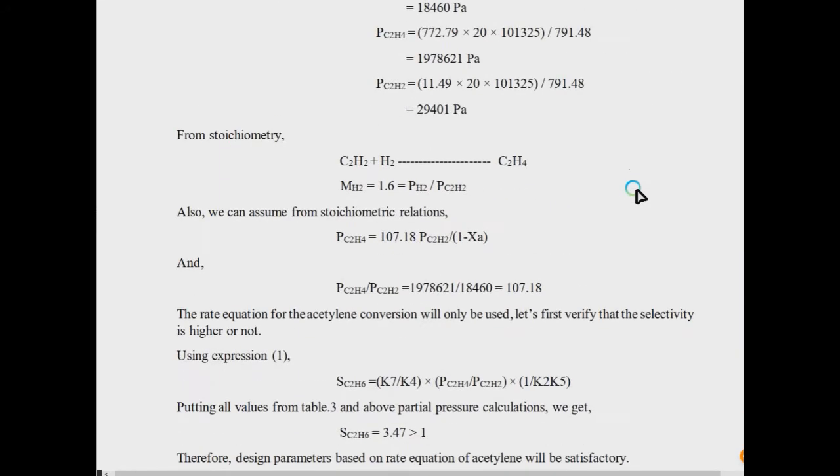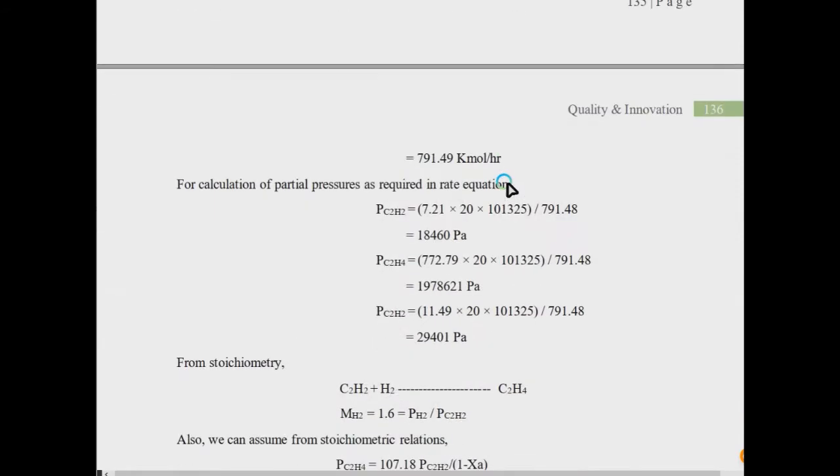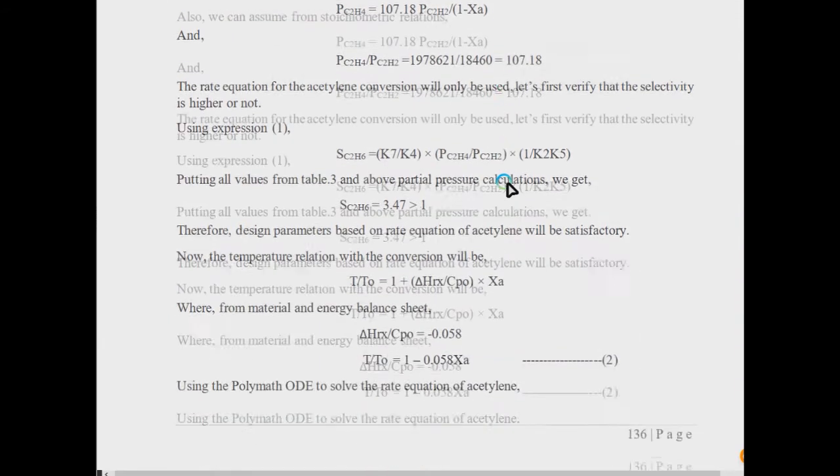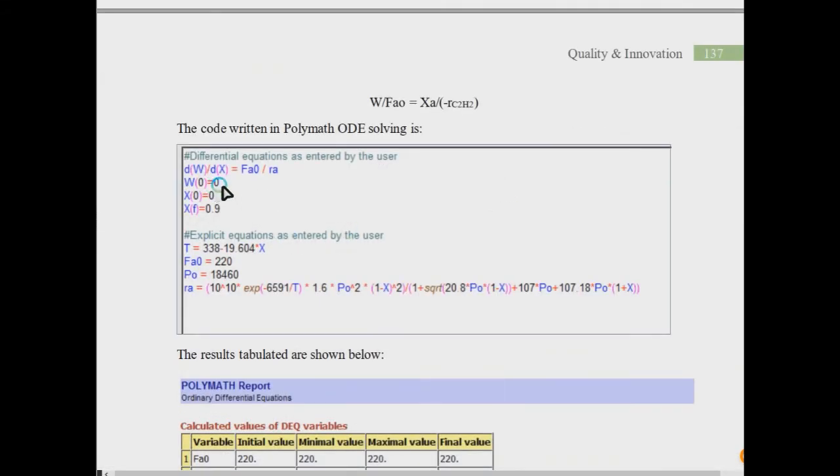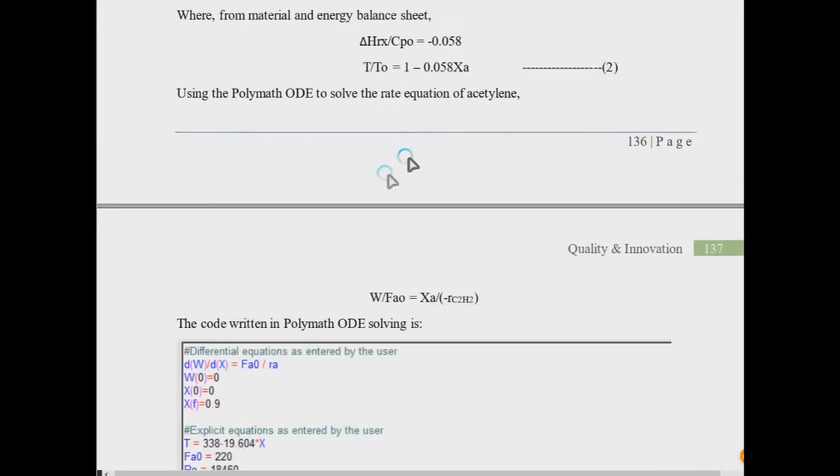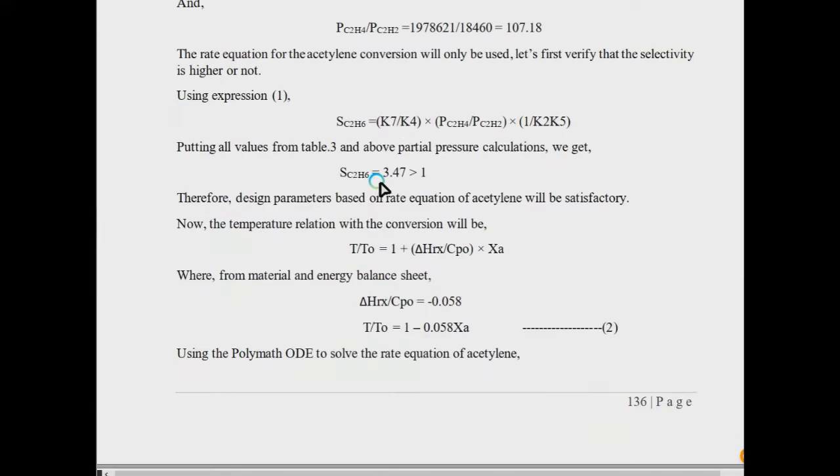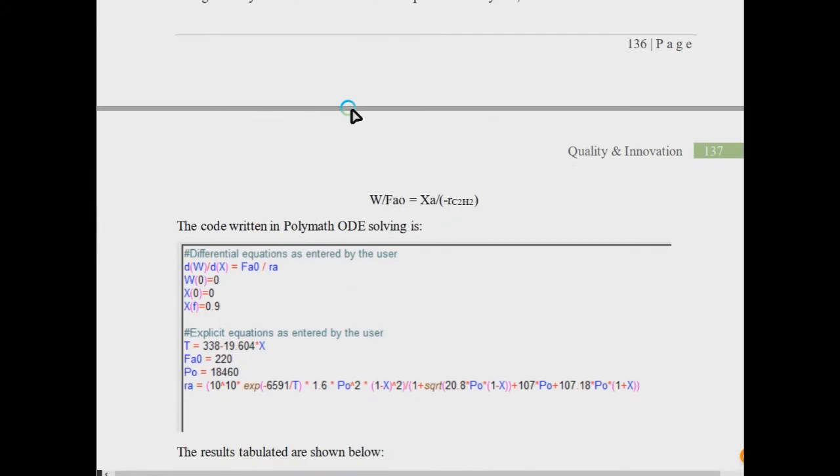After you have found the kinetics, put them into the main equation W/FA0 equals integral X over. We have used Polymath software. The code I have written is dW/dX equals FA0 over rA. There will be a lecture on Polymath, so don't worry about it. I am only telling how to follow the standard procedure of design of a packed bed reactor.